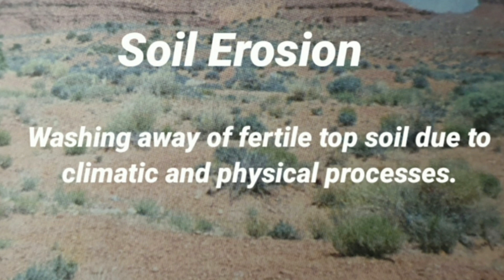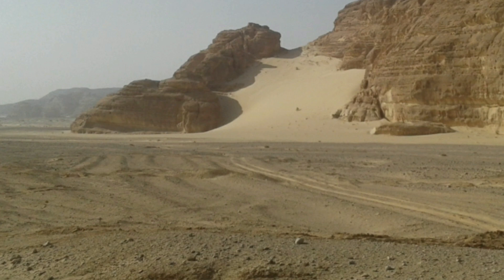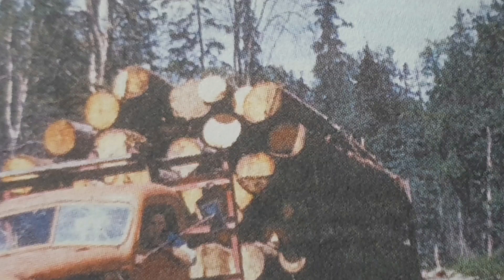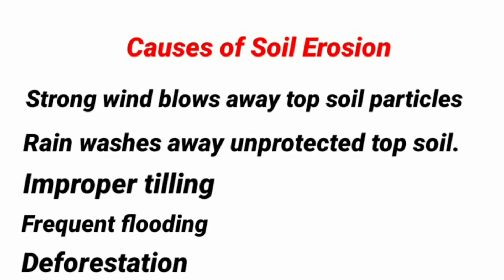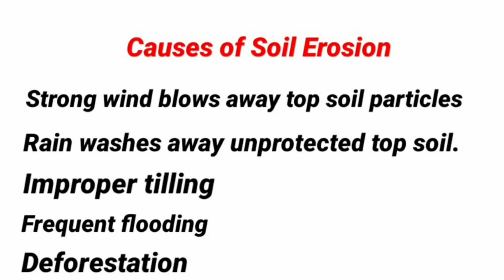What do we mean by soil erosion? It is the removal and transportation of the topsoil from its original position due to factors such as strong winds or fast-running rainwater. Soil erosion results in desertification or a reduction of soil fertility. Causes of soil erosion include strong winds carrying fine soil particles, heavy rains washing unprotected topsoil into streams and rivers, deforestation, improper cultivation practices, and excessive use of insecticides and pesticides.